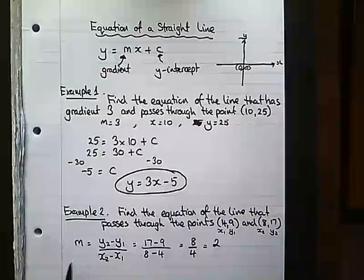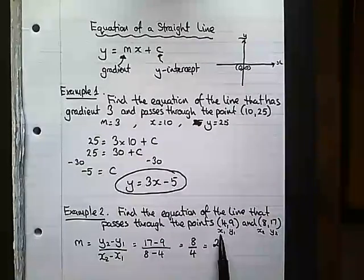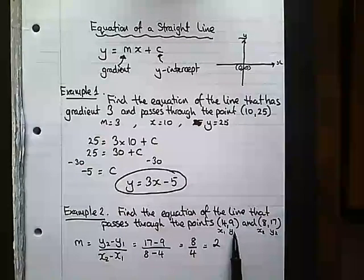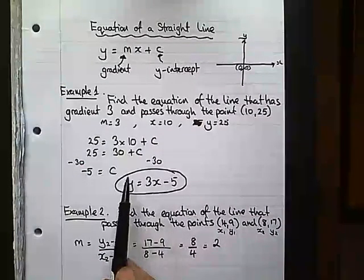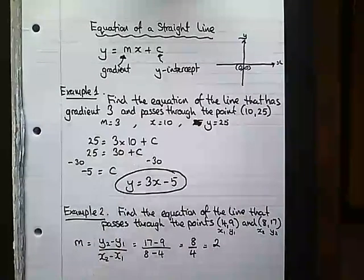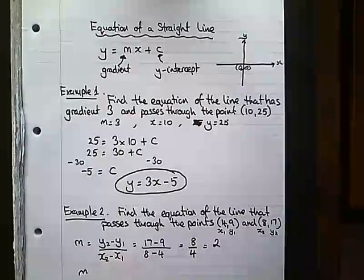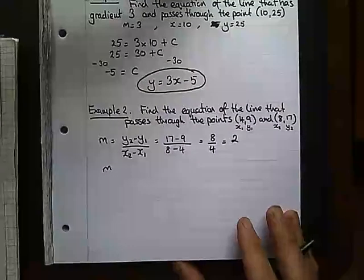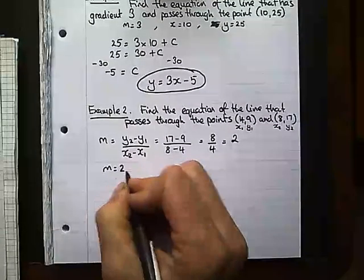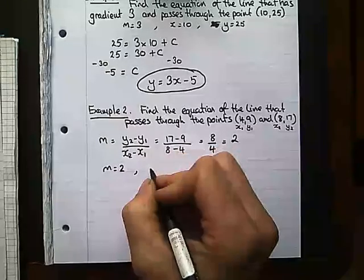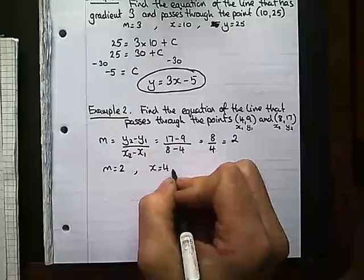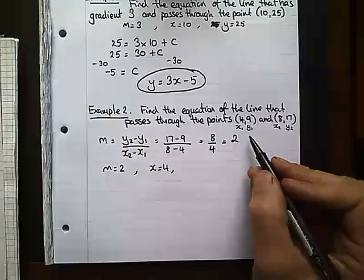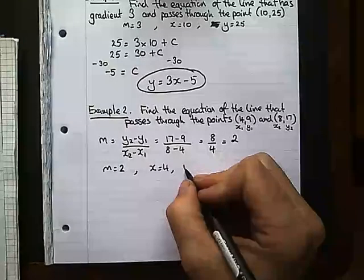But now I've got my gradient and I've got an x coordinate and I've got a y coordinate, I can go back to the previous question and do what I did before. m equals 2. Let's pick one of these coordinates: x equals 4, usually the one with the nicest numbers, and y equals 9.